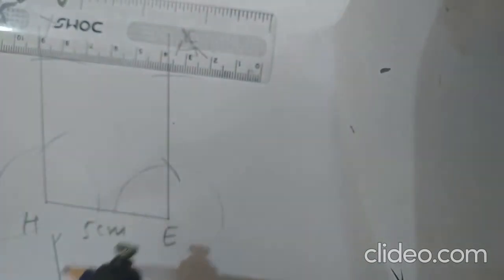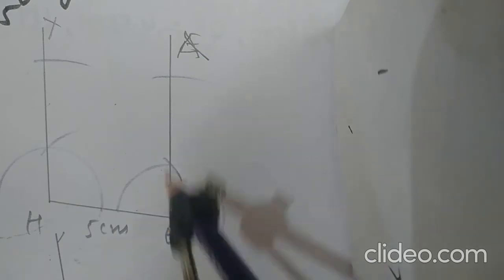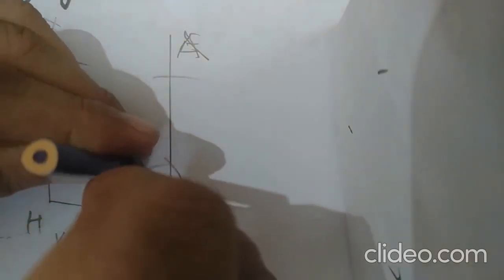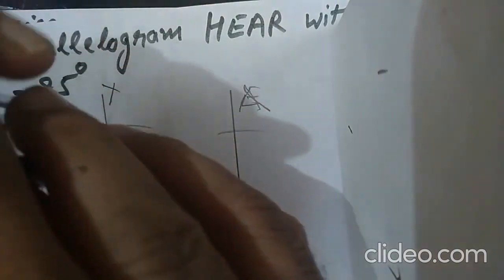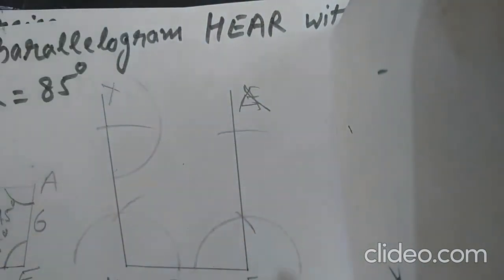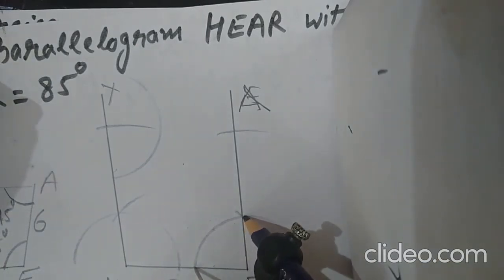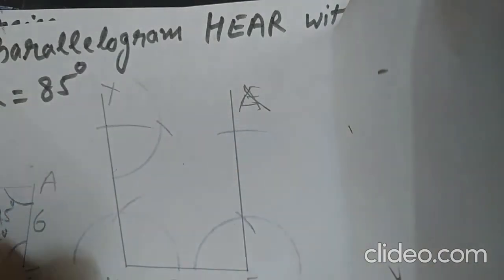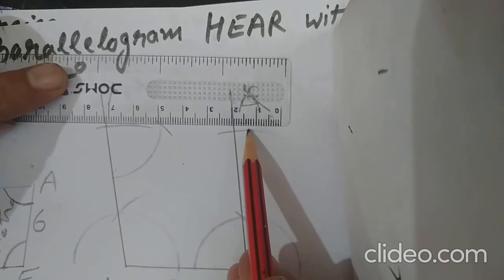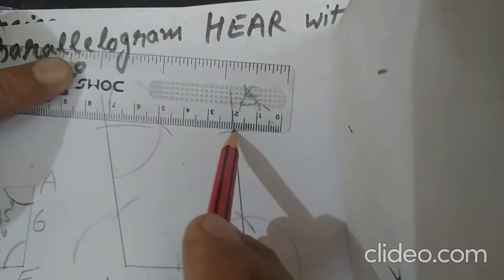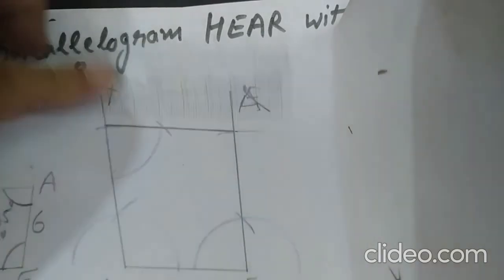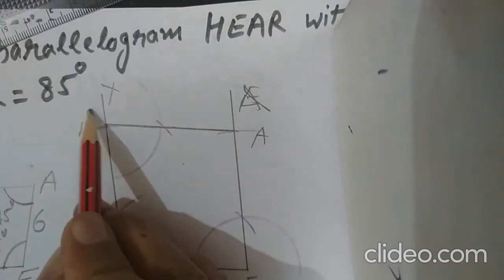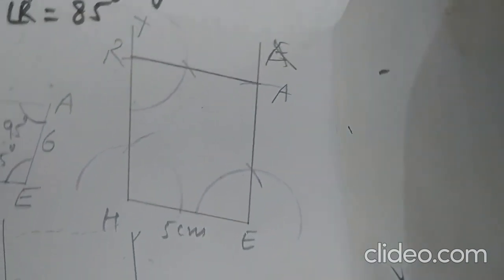We join this one. Now we have H, E, A — and R should be 85°. I draw the same semicircle at R to get the same 85°. Join the final point — it goes exactly to complete the shape. This is H, E, A, R — the required parallelogram. Thank you.